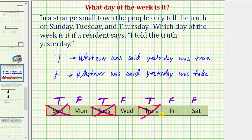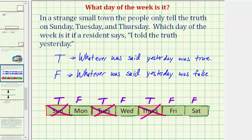So now let's consider the remaining days where whatever the resident says is false, which would be Monday, Wednesday, Friday, and Saturday. If the resident says 'I told the truth yesterday' on a day where whatever they say is false, what it really means is whatever was said yesterday was false. Well, the day before Monday is Sunday — on Sunday whatever the resident says is true, which is not false, and therefore it cannot be Monday.